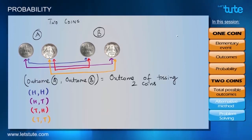You can go ahead and try tossing two coins and see if there are any more possible outcomes that can appear. And you will see that there are only four outcomes that are possible. Now, there is a faster way of actually calculating the total possible outcomes.